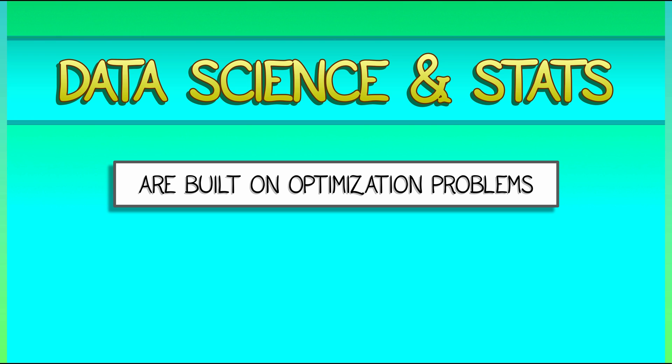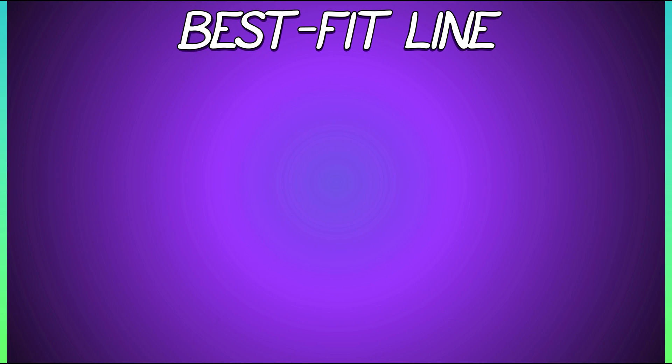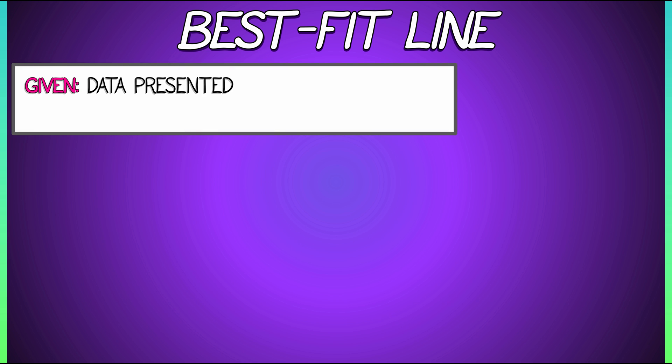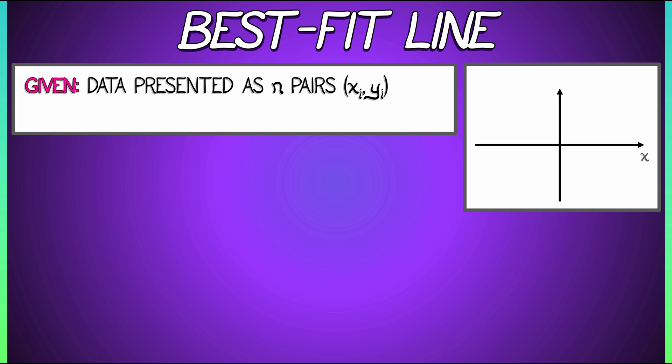Now, here's a classic example that comes from statistics. It's really simple, but it's really illustrative of what we've done. And this is the problem of a best-fit line. Let's say that you've got a bunch of data that is presented as pairs of points with x-coordinate xi, y-coordinate yi, and there are, let's say, n of these points.